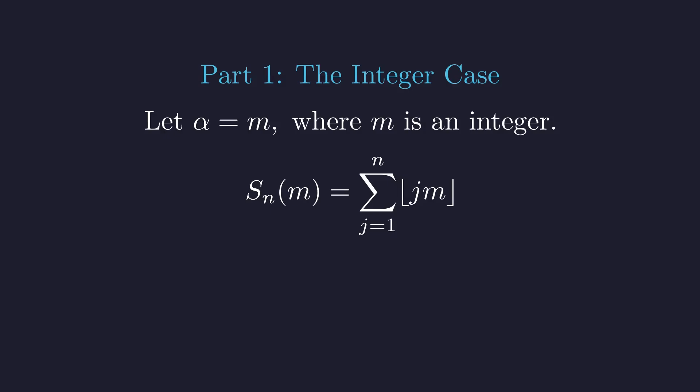We substitute m into the sum. Since j and m are integers, their product is an integer, so the floor function has no effect. The sum simplifies to the sum of j times m. The term m is a constant with respect to the summation variable j, so we can factor it out.